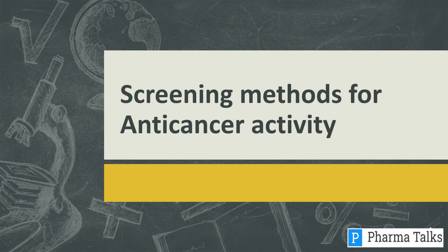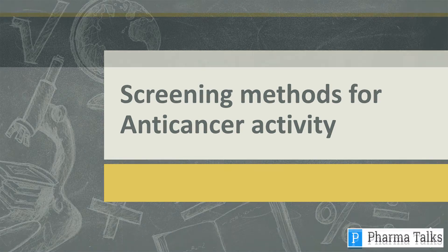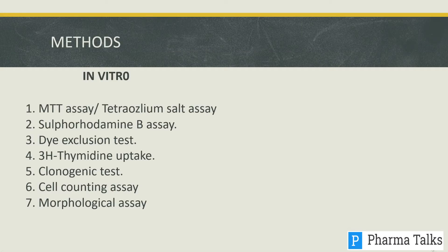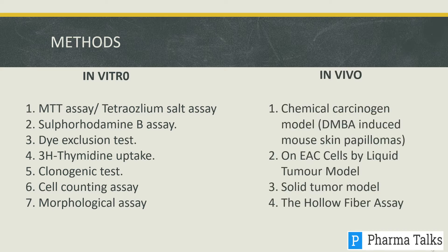Screening methods for anti-cancer activity include in vitro methods such as the MTT assay, Sulforhodamine B assay, dye exclusion test, thymidine uptake, and clonogenic test, as well as in vivo methods including the chemical carcinogen model, liquid tumor model, solid tumor model, and hollow fiber assay.